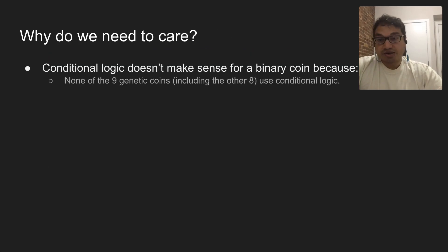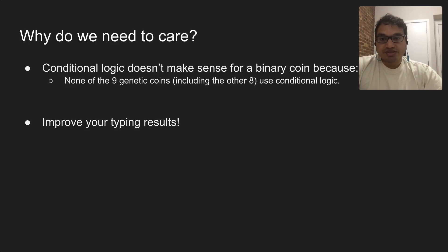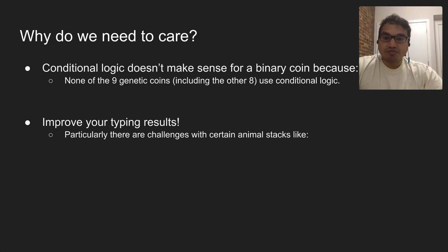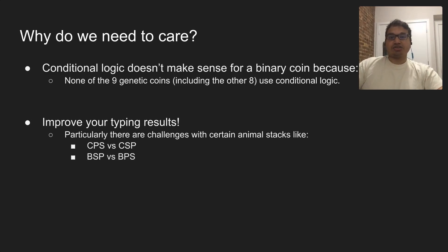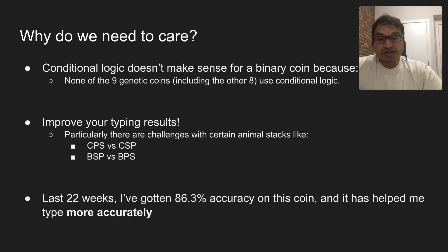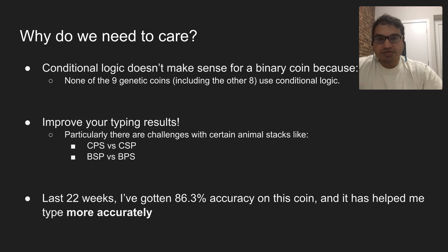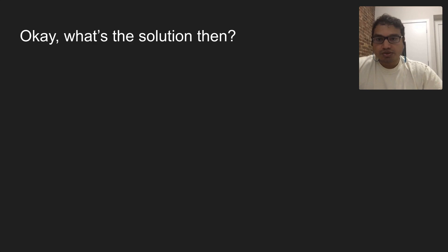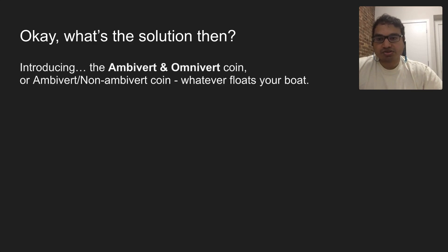Why do we need to care? None of the other eight coins use conditional logic, and you can improve your typing results. I've been observing this coin for at least the past 22 weeks, and it actually helps you improve on challenging animal stacks like consume-play-sleep, consume-sleep-play, blast-sleep-play, and blast-play-sleep. Over the last 22 weeks I got 86.3% accuracy, so it's helping me be a lot more accurate for this coin. The rest is roughly around 80%.